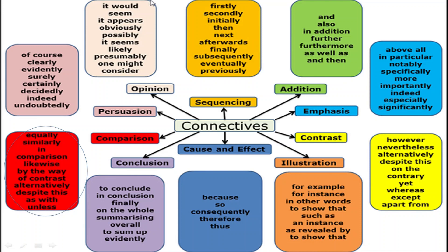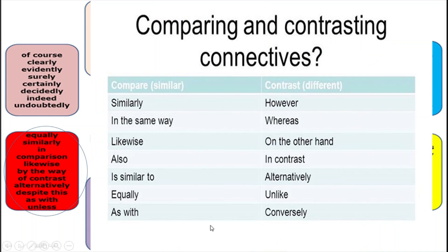For Criterion C, let's talk about connectives. Each paragraph should start with a connective, and you should be using connectives throughout your work to maintain cohesion. For Paper 2, we're going to have to include a lot of comparison connectives. I've circled some for you on screen, and I have some extra ones here as well. Make sure you are familiar with these connectives and competent when it comes to including them in your work.